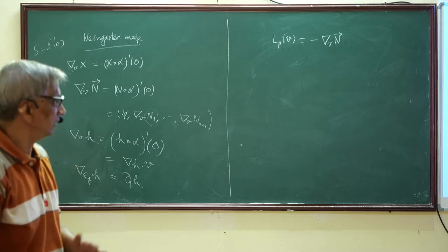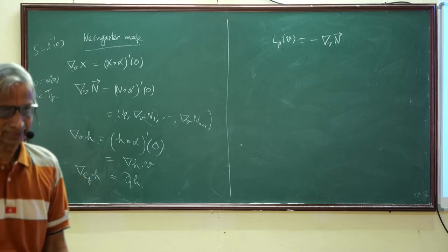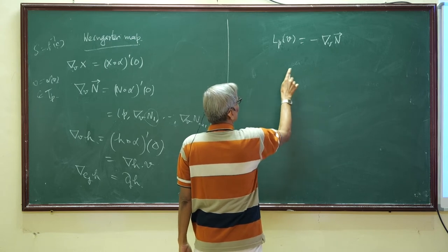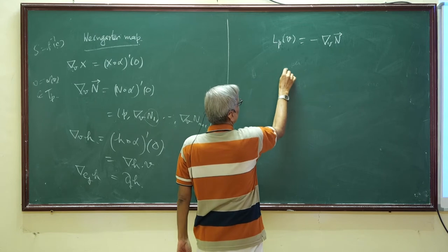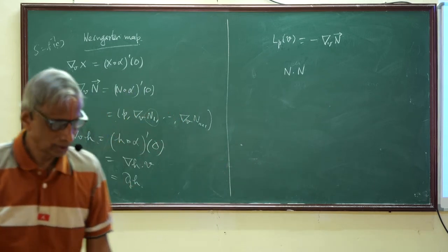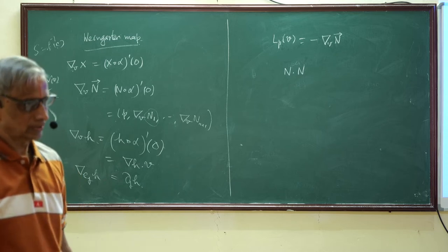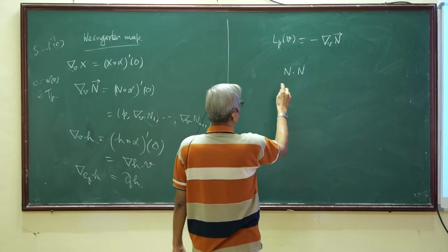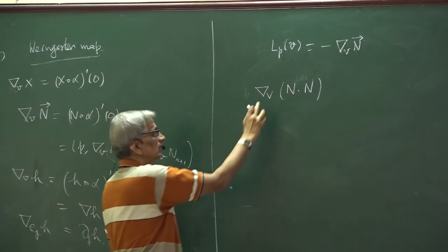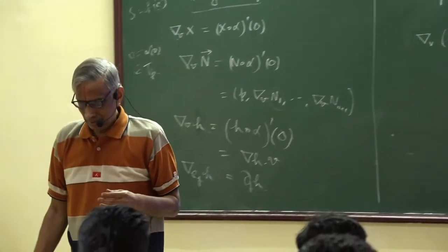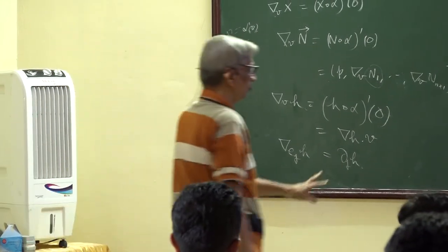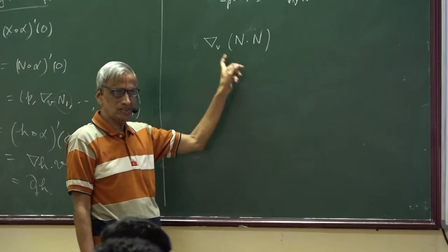In other words, we want to say that it is perpendicular to the normal. Take n, look at n dot n — I am omitting the arrows. n dot n is a scalar valued smooth function. What is its derivative? How do you differentiate a dot product? Use the usual product rule: derivative of this dot that, plus this dot derivative of that.